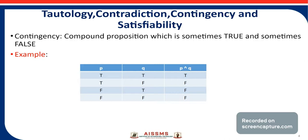Now see the truth table for P and Q. The first value: P is true, Q is true, then P and Q would be true. P is true, Q is false, then P and Q would be false. P is false, Q is true, then P and Q would be false. P is false, Q is false, then P and Q would be false. Now see this truth table — it contains sometimes true and sometimes false values. Hence it is called a contingency.